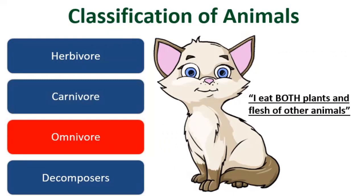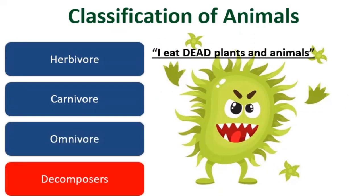The next category is an omnivore. Omnivores are those animals that eat both plants and flesh of other animals, like a cat and even we human beings. The last is a decomposer. Decomposers are those organisms that feed on dead plants and animals, like bacteria.